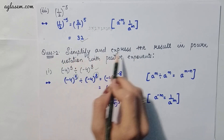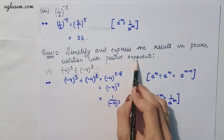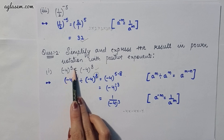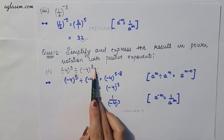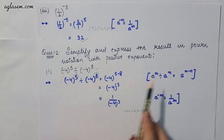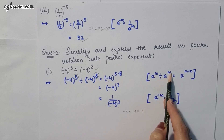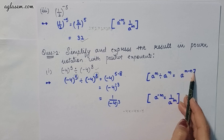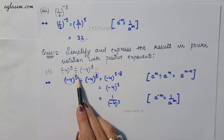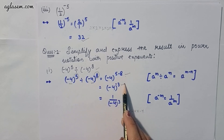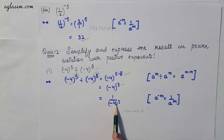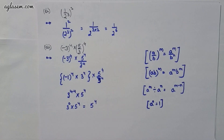Moving to the second question: simplify and express the result in power notation with positive exponents. The first part is (-4)^5 divided by (-4)^8. Taking (-4) as the common base, we apply the formula a^m / a^n = a^(m-n), giving (-4)^(5-8) = (-4)^(-3), which we write as 1 / (-4)^3.